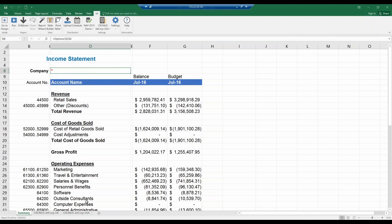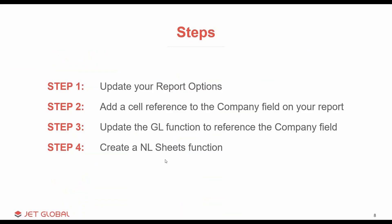Let's recap the steps to create that report. First, create or update your report options and use a nested NP function to include a filter for the company, department, or whatever you wish to consolidate on. Next, add a cell reference to your main report that references back to that company field on your options tab. Then update the GL function for each account to reference the company filter. Finally, make a copy of your sheet and use the NL Sheets function to create a sheet for each company when the report is run. And now you know how to create a consolidated income statement.